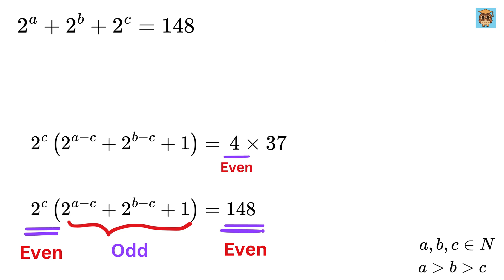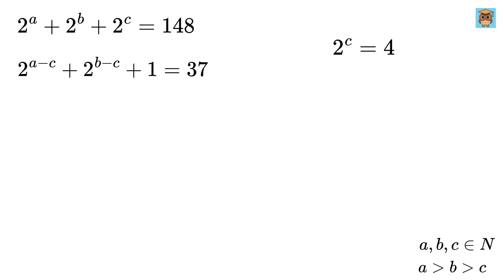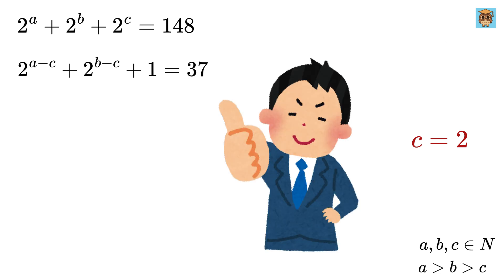Now, this is even, and this is odd, so definitely 2 to the C equals 4, and this whole thing will be equal to 37. Now, rewrite 4 as 2 squared and compare both sides to get C equals 2.